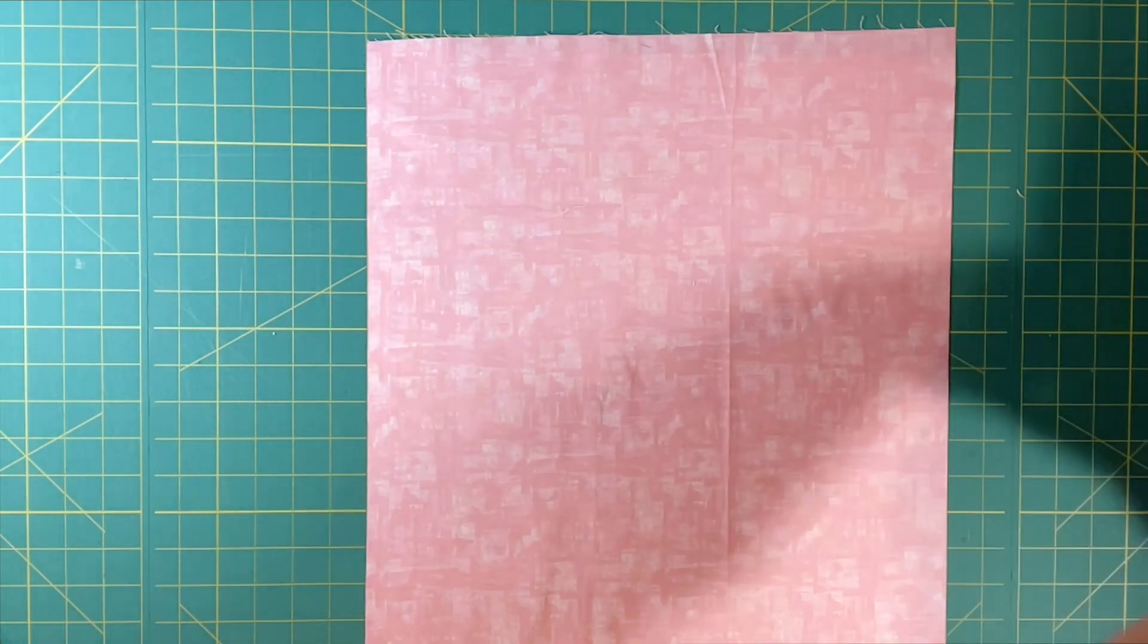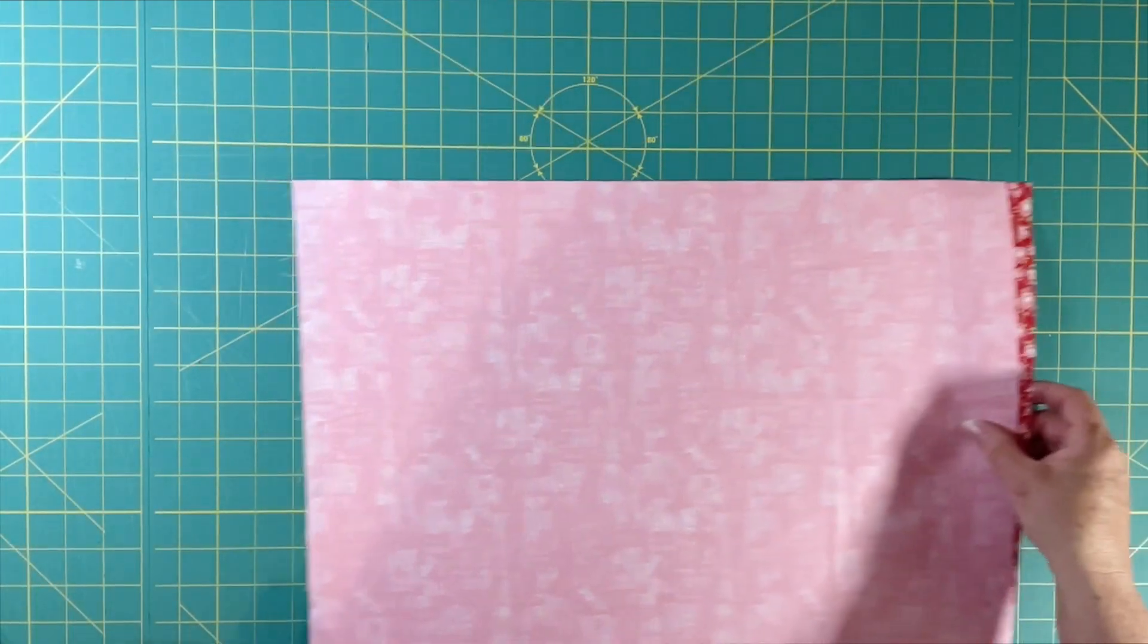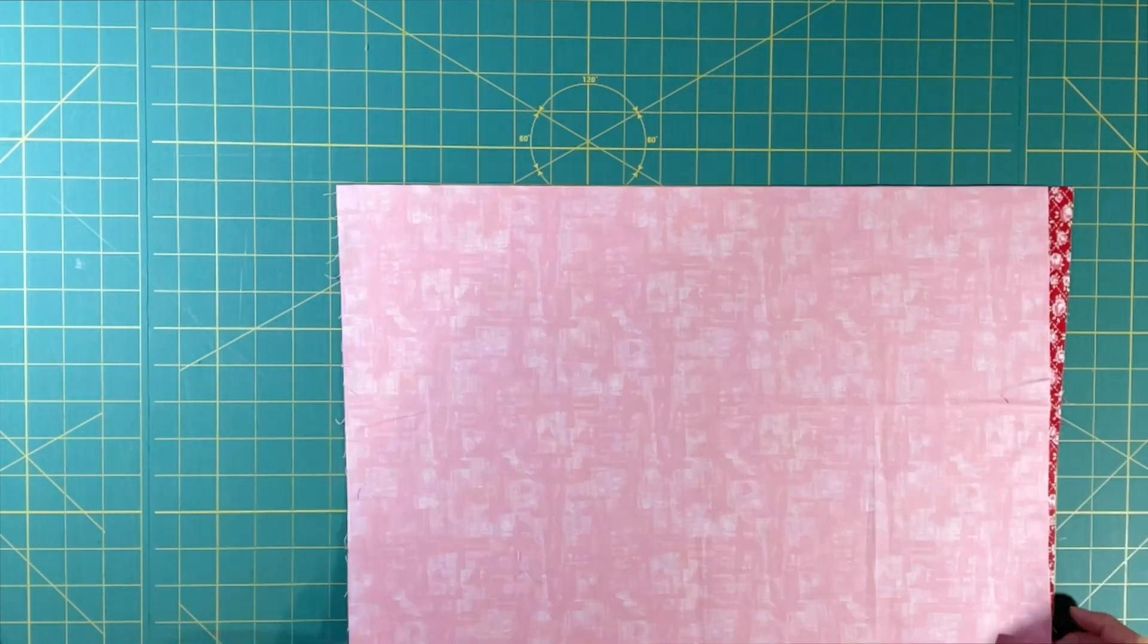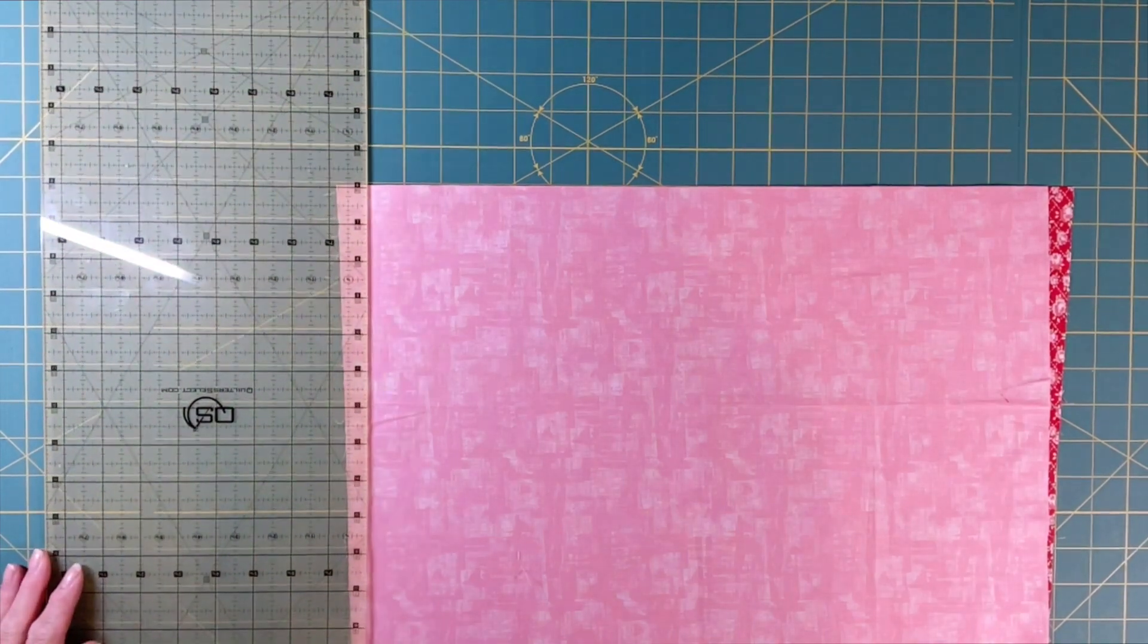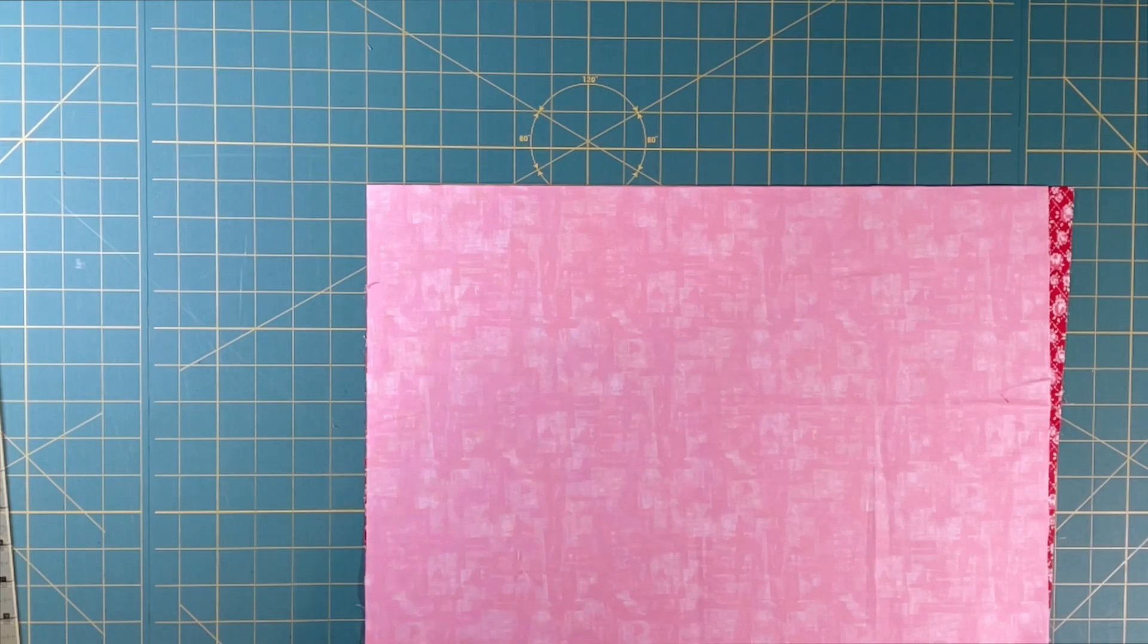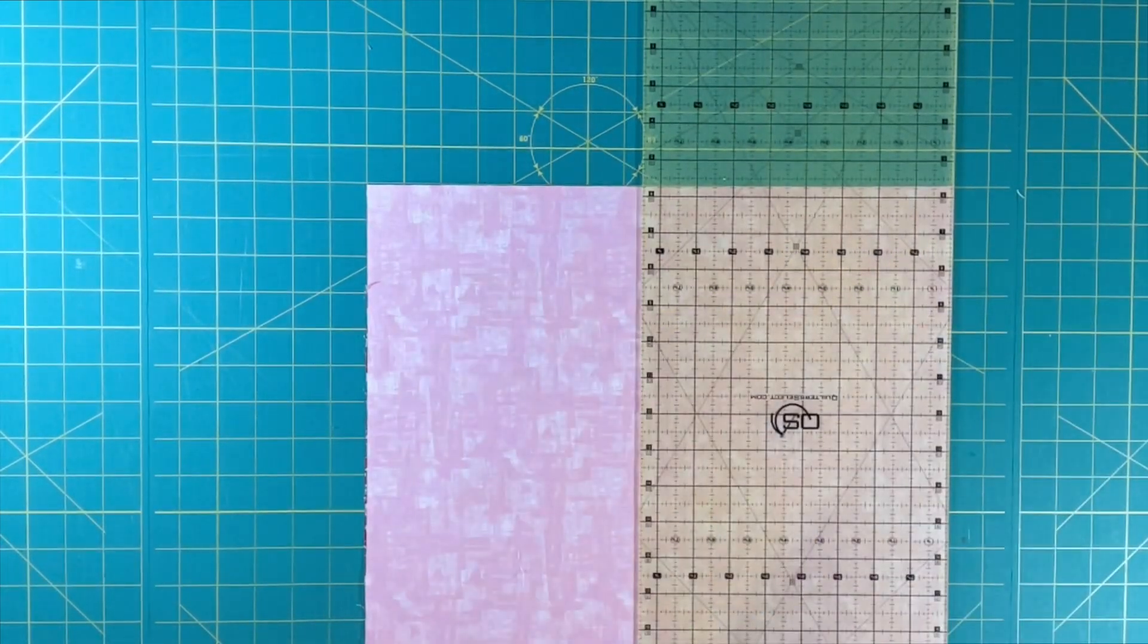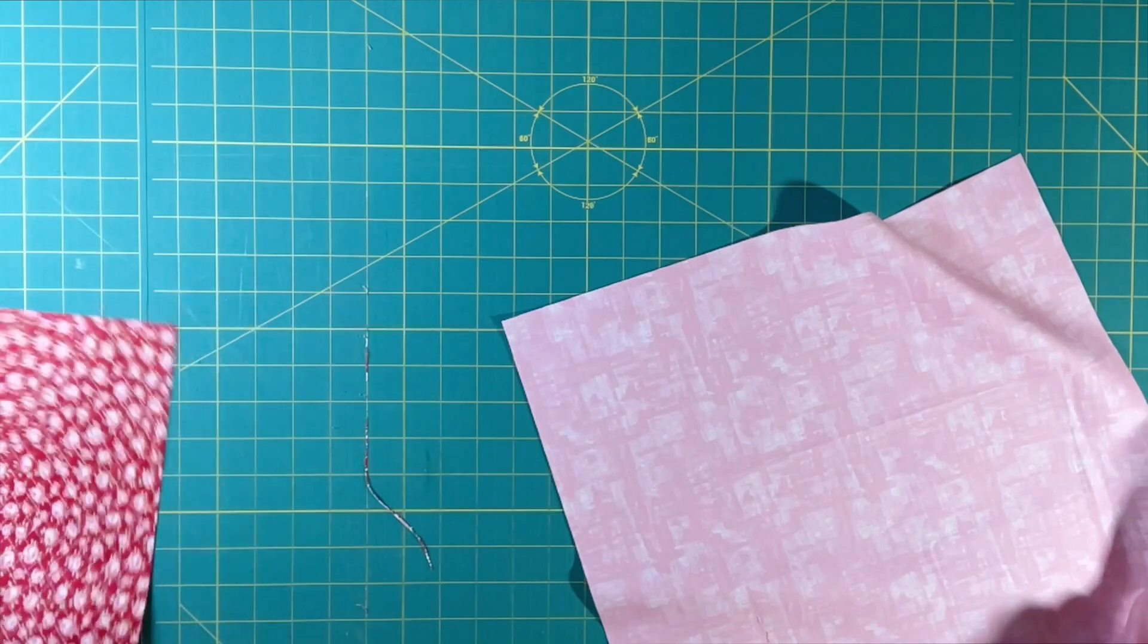Now I can create a straight edge on this side. I'm going to take off a little bit here and then measure over 16 inches, and then there's your other scraps. That's all the scraps you have left from your fat quarters.